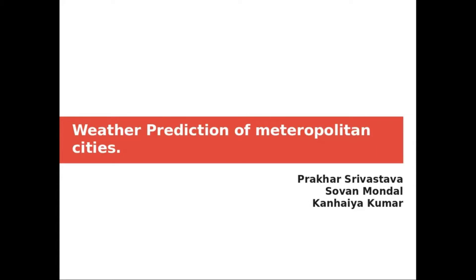We have selected the supervised learning algorithm neural networks for this project. We have chosen the datasets of four cities which are Kolkata, Chennai, Delhi, and Jamshedpur. Every dataset consists of general fields like date, maximum temperature, precipitation, and solar moon angle, etc.